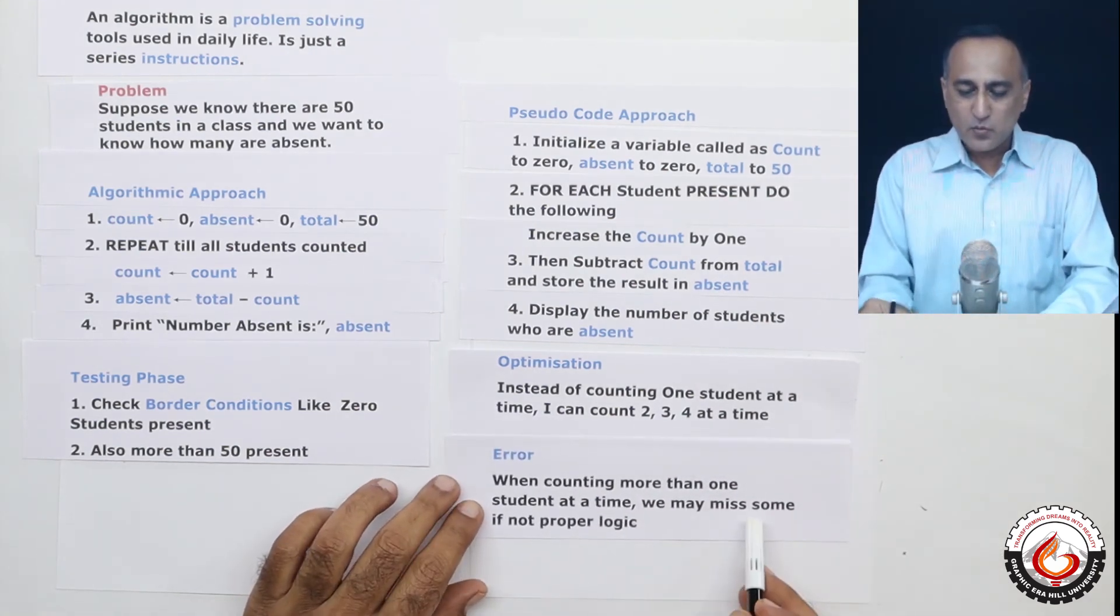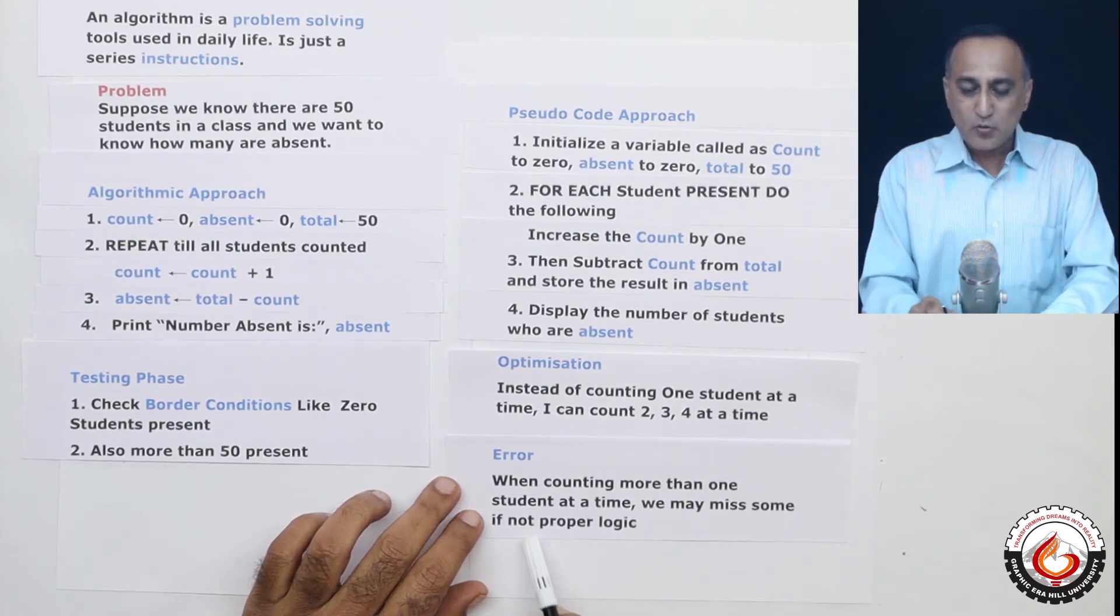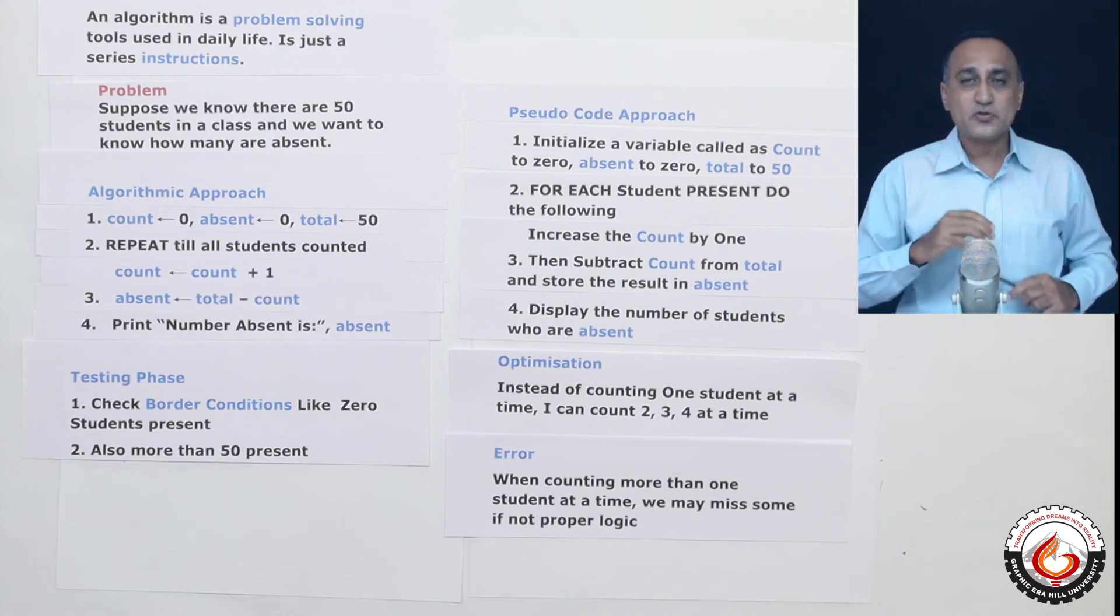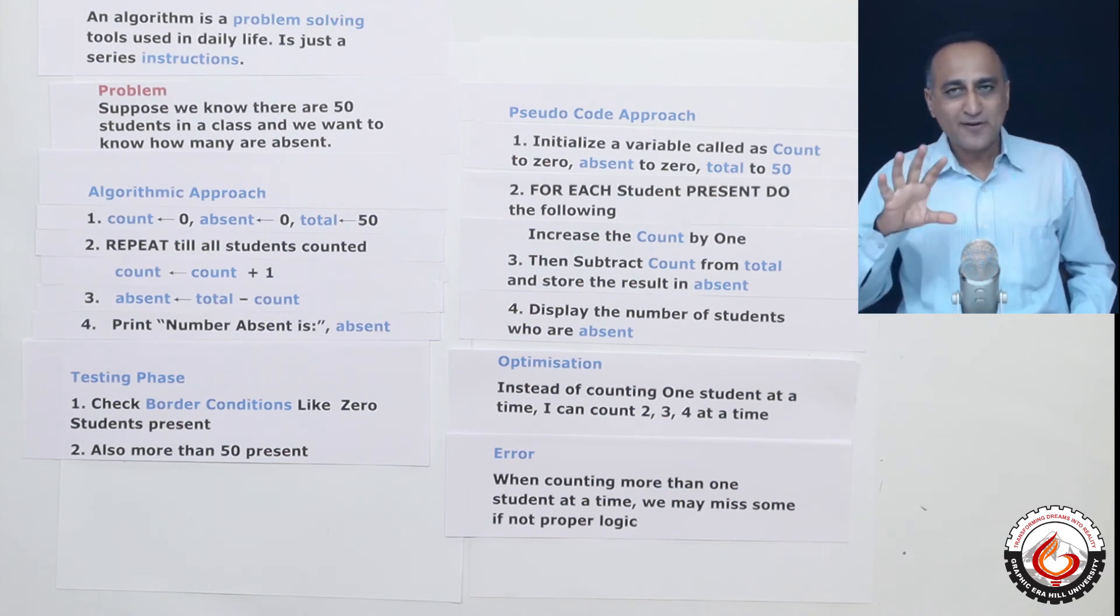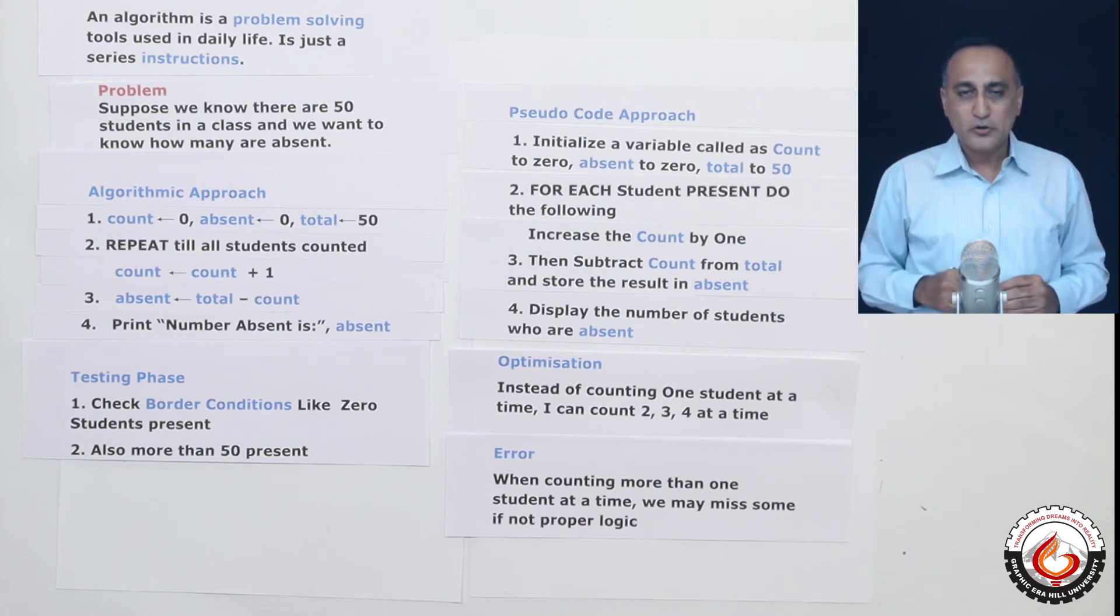What I'm trying to say here is, suppose there are 44 students, and I'm counting in multiples of five. So till 40, no problem, because I am getting a group of five each. But once I reach 40, there are only four remaining. I should not forget to add the four also to the count. That is an error which we tend to make while programming. So you should have proper logic to do that.